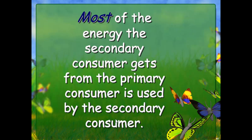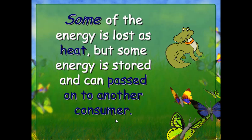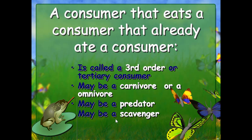A predator is an organism that hunts and kills its food to eat it. A scavenger is an organism that waits for either someone else to kill an organism or for something to die, then eats it — like a buzzard, catfish, shrimp, or possum. A consumer that eats a consumer that already ate a consumer is called a third order or tertiary consumer. They may also be a carnivore, omnivore, predator, or scavenger.